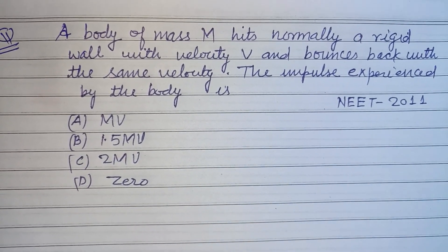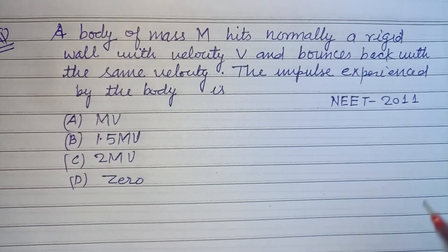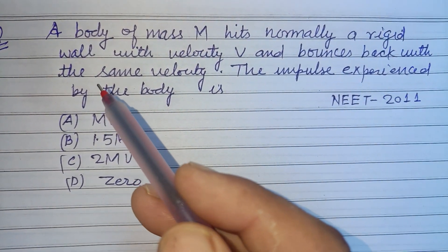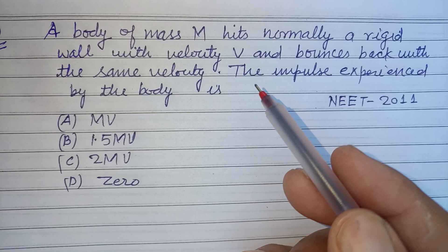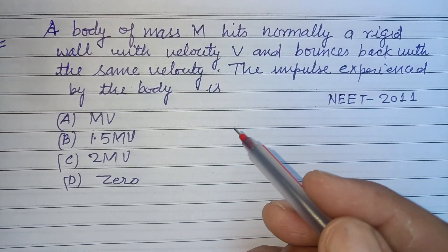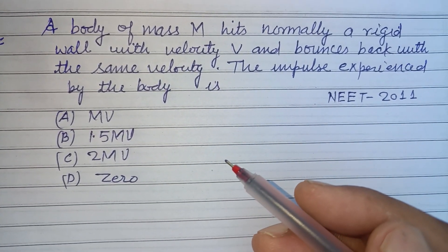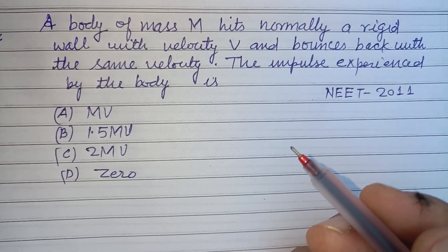Hello viewers, warm welcome to this YouTube channel. This is a question from NEET 2011. A body of mass M hits normally a rigid wall with velocity V and bounces back with the same velocity. The impulse experienced by the body is: